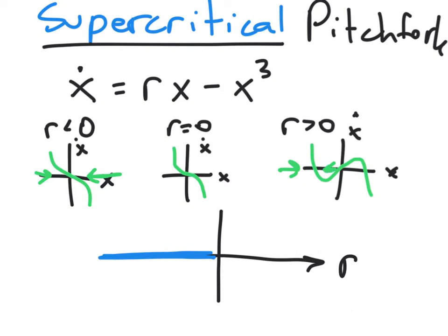Right here we're decreasing, here we're increasing, and there we're decreasing. Note that if we were looking from far away at a large value of x, the picture looks similar. If we zoom really far out, this little interior part disappears. The main thing that's changed is something has changed very locally at the origin — the stability of this fixed point has changed, and now it's unstable.